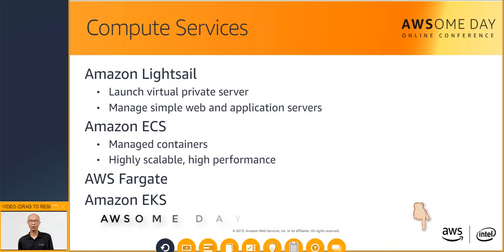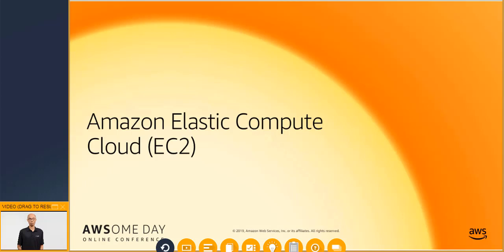Amazon EKS, or Amazon Elastic Container Service for Kubernetes, is a managed service that makes it simple to run Kubernetes on AWS without needing to install or operate your own Kubernetes clusters. Kubernetes is an open-source platform used for managing containerized applications and workloads. Now that's a lot of compute services. Let's focus on Amazon EC2, which underpins many of the workloads you will be deploying on the AWS platform.